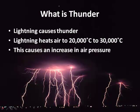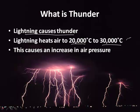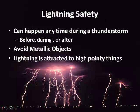What causes thunder? Lightning causes it. Here's how it works: the lightning heats air to 20,000 to 30,000 degrees Celsius — hotter than the surface of the Sun. This causes a rapid increase in air pressure, which causes an explosion, and that explosion is the thunder.